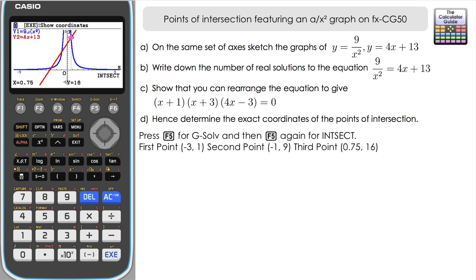Now let's work through each factor. For x plus 1 equals 0, x equals minus 1. Substituting into y equals 9 over x squared: y equals 9 over (minus 1) squared, which is 9 over 1, so y equals 9. The coordinates are (minus 1, 9). We knew that from the calculator, but we've shown it using the factors from part c — that's what 'hence' requires in part d.